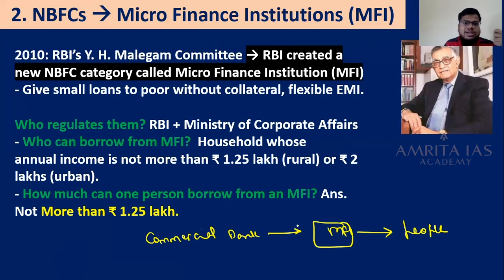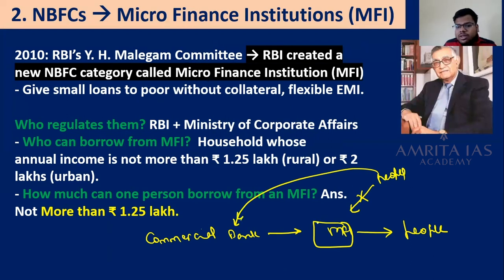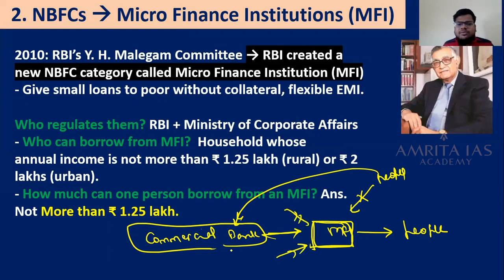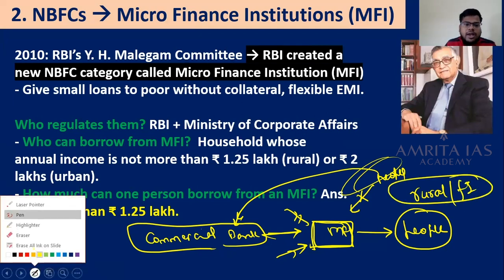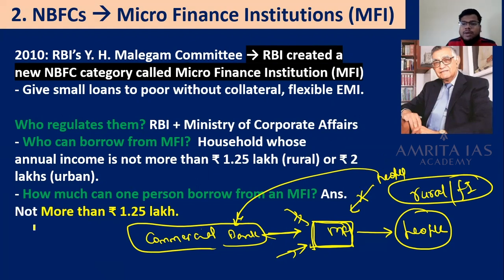MFIs are known as non-deposit-taking MFIs — they do not take deposits from people. People deposit their money into commercial banks. MFIs get their money from commercial banks, government support, or their own funds. MFIs then lend to the people. We need MFIs because they have a very strong rural presence and a very strong financial inclusion network infrastructure compared to commercial banks.